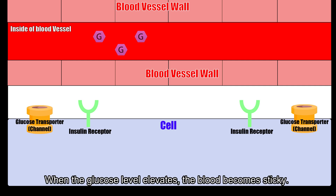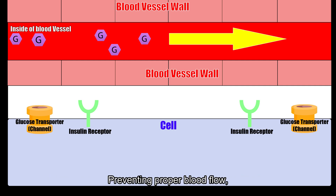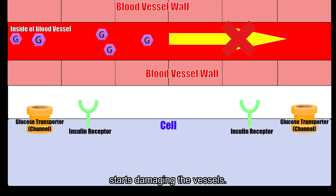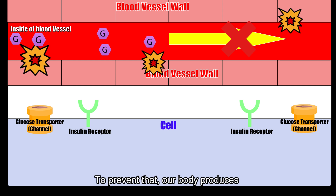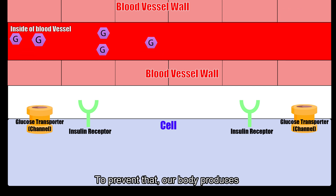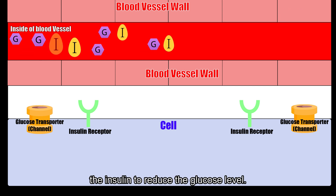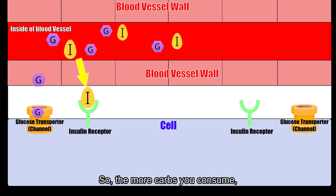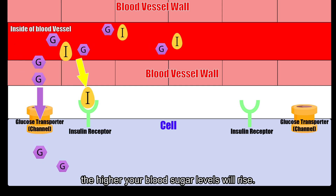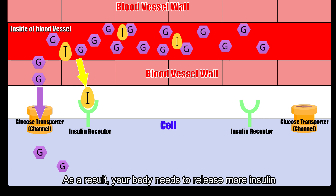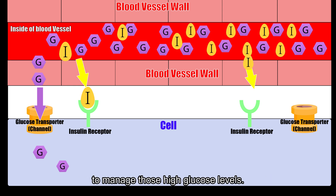When glucose levels elevate, the blood becomes sticky, preventing proper blood flow and starting to damage the vessels. To prevent that, our body produces insulin to reduce the glucose level. So the more carbs you consume, the higher your blood sugar levels rise, and as a result, your body needs to release more insulin to manage those high glucose levels.